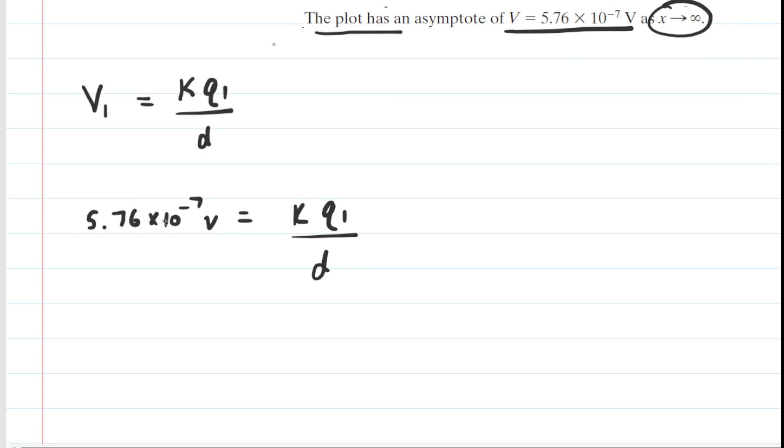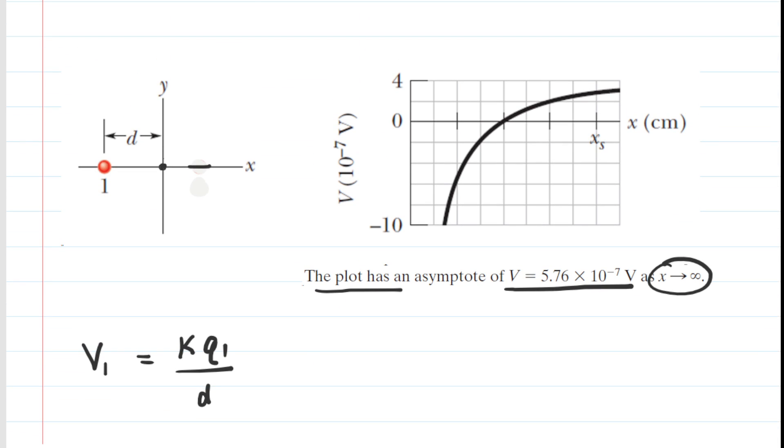Now it is useful to sort of hold on to this expression for now. This is K times Q1 over d. We're going to put a little checkmark right there and we're going to be referring back to that value momentarily. But now let's bring Q2 back. We've moved it infinitely far away. Let's go back and let's grab it here, and we'll put it back.